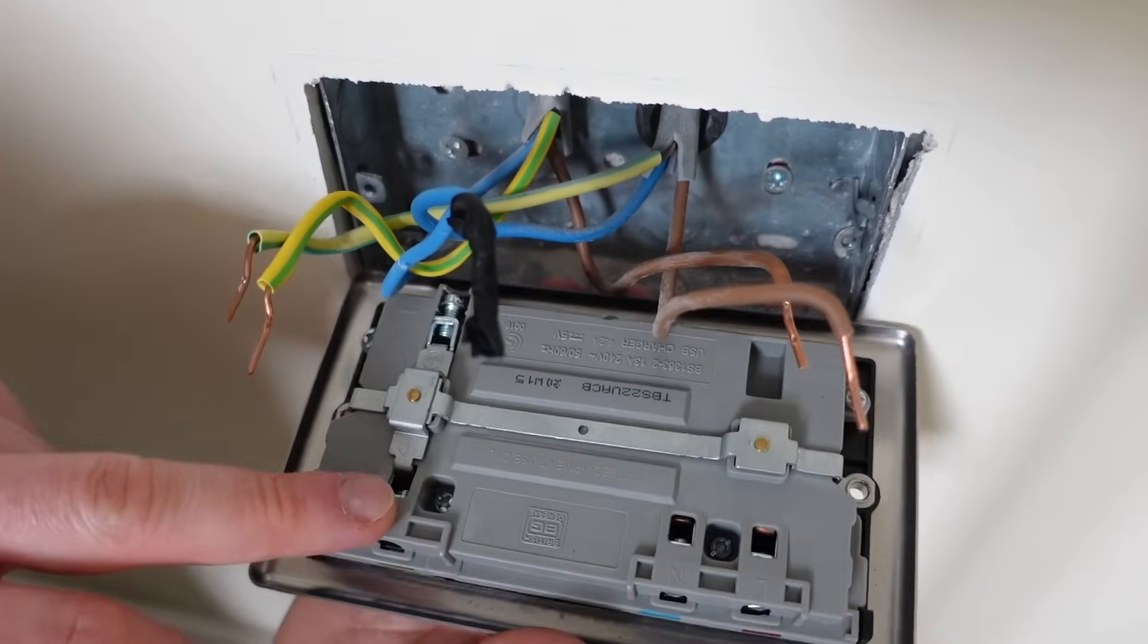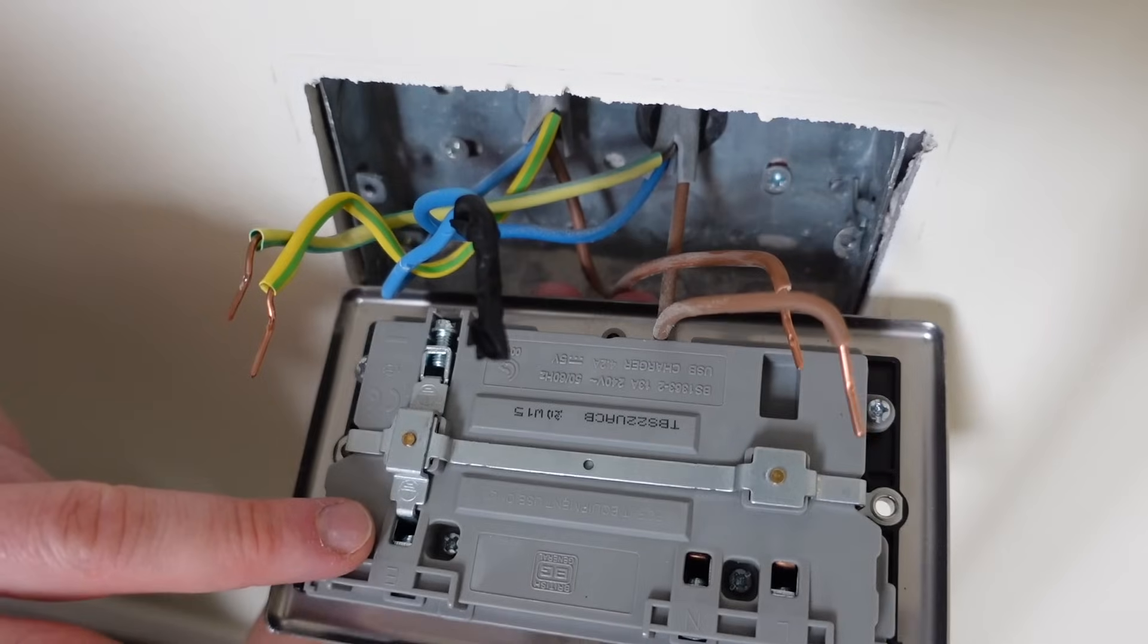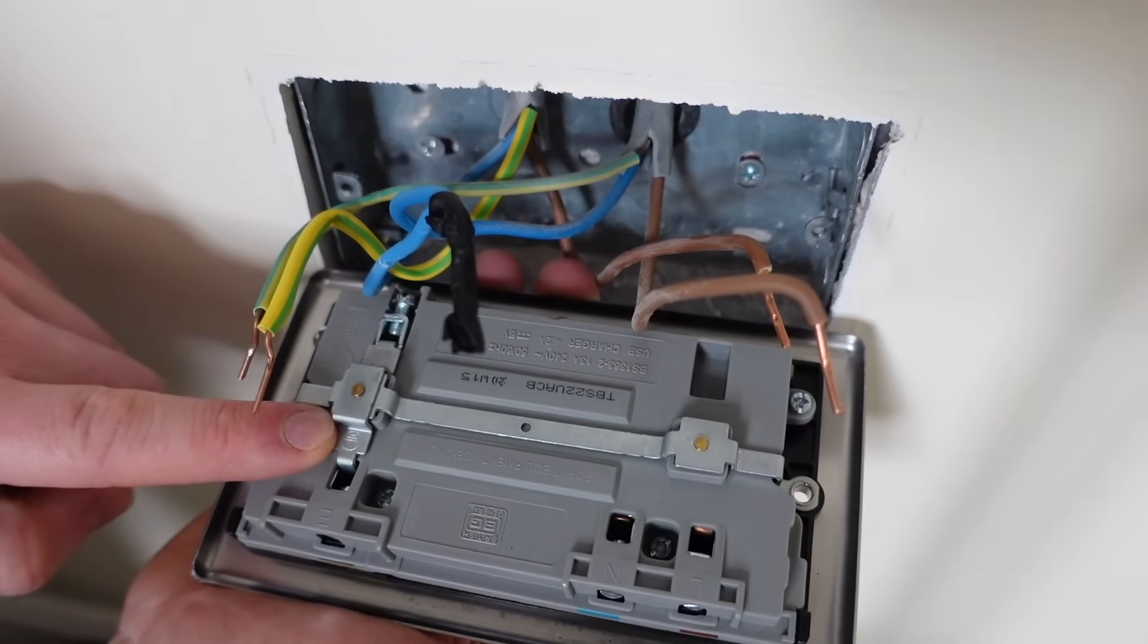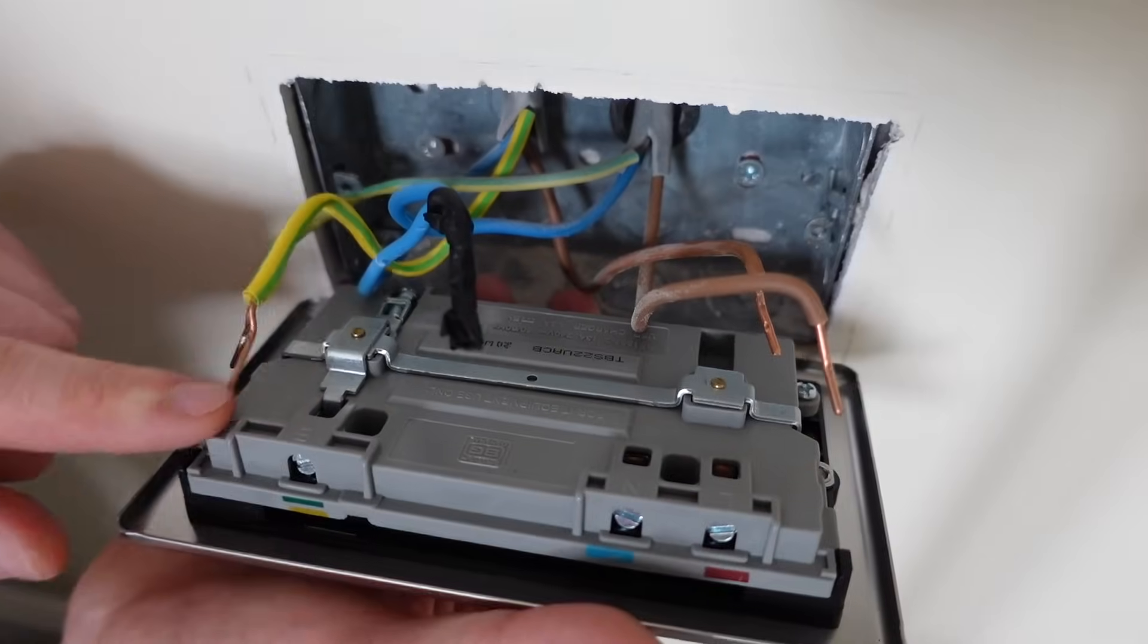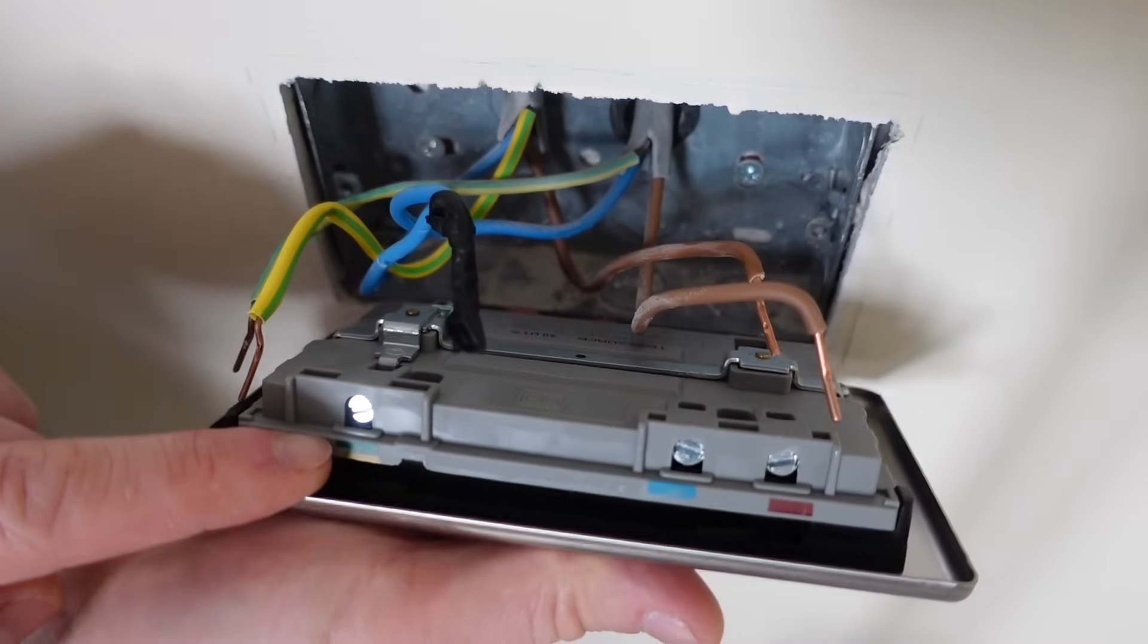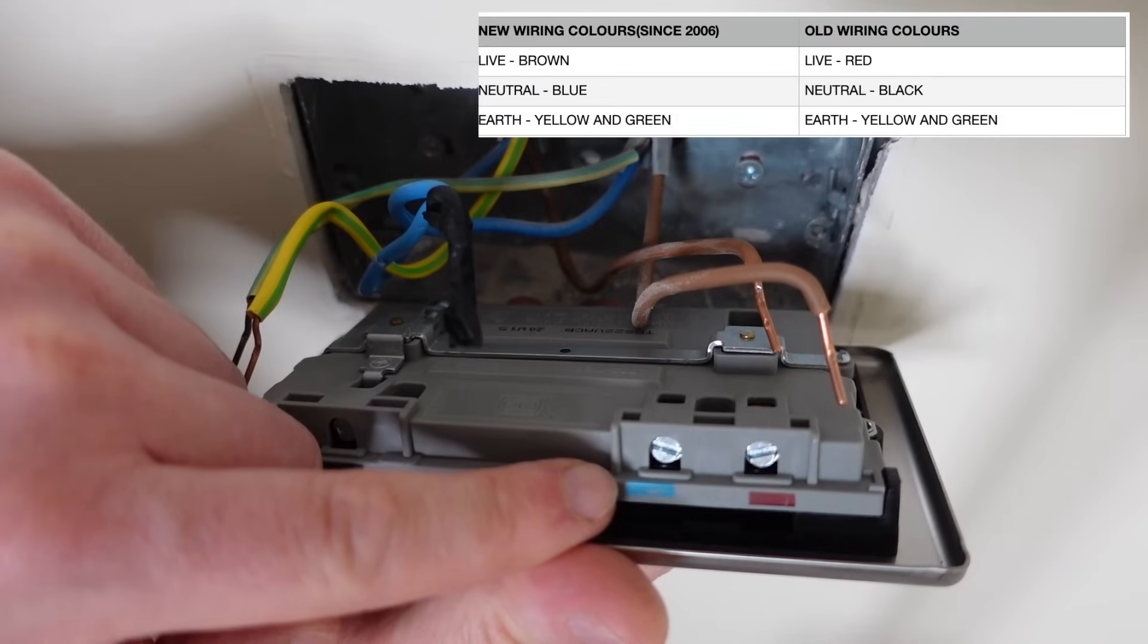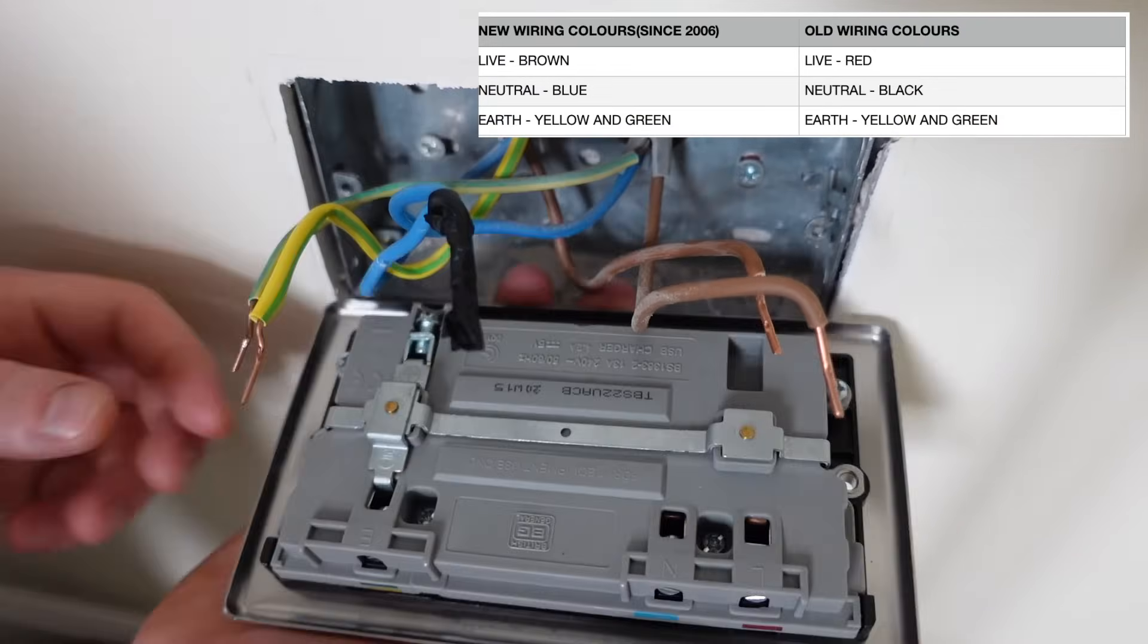You can see that the terminal screws on the British General sockets are pre-undone for you. So the next thing we need to do is take note of the terminals so we've got CPC and earth and you can see they're labelled on there for us with colours as well. And then we've got neutral which is the blue one and the live which is the brown one.